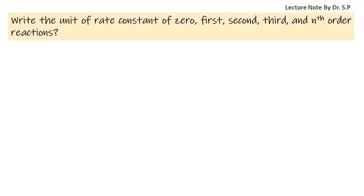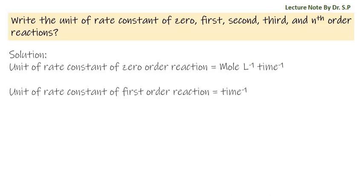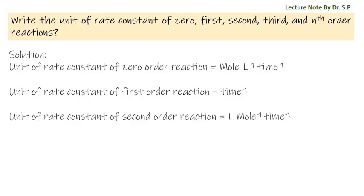Write the unit of rate constant of zero, first, second, third, and nth order reactions. Solution: the unit of rate constant of zero order reaction is mole per liter per time. The unit of rate constant of first order reaction is per time. The unit of rate constant of second order reaction is...